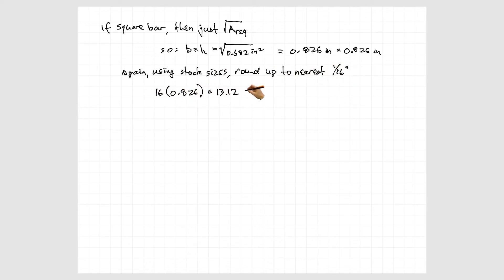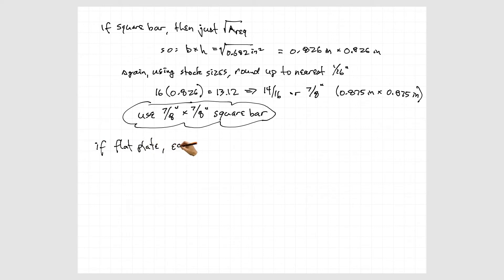Again, if we use stock 16th inch sizes, take that 0.826 times 16, we get 13.12, round that up to 14/16ths, which is 7/8ths. So we can use a 7/8ths by 7/8ths inch square bar.